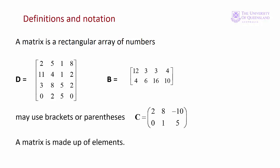Generally we use a bold uppercase letter for a matrix. So here we have D, B and C. However if we're handwriting there's no need to make it bold. A matrix is made up of elements. So each of the numbers we can see in these three matrices is an element.